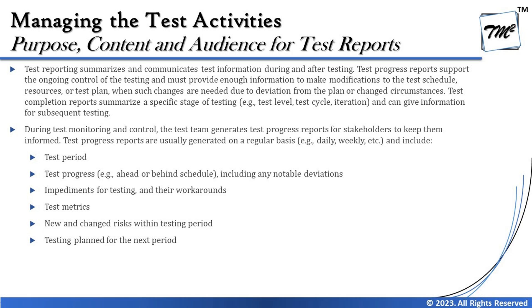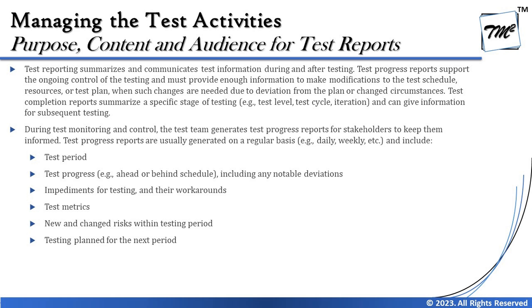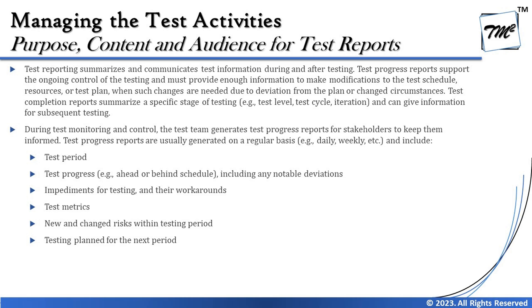During test monitoring and control, the test team generates test progress reports for stakeholders to keep them informed. These reports are usually generated on a regular basis — daily, weekly, etc. — and can include: the test period or duration, the test progress made so far (whether you're ahead of, on, or behind schedule), notable deviations, impediments for testing and their workarounds, and test metrics about test cases, defects, and risk coverage.